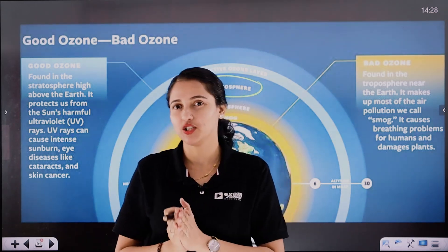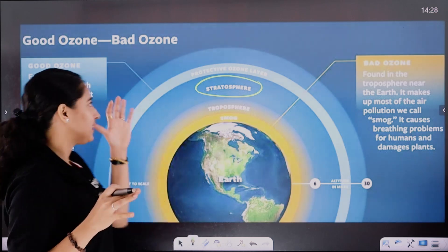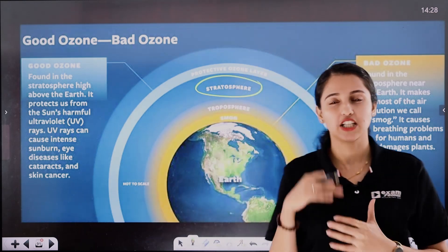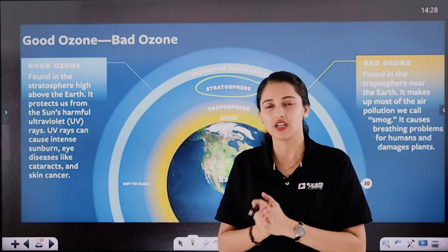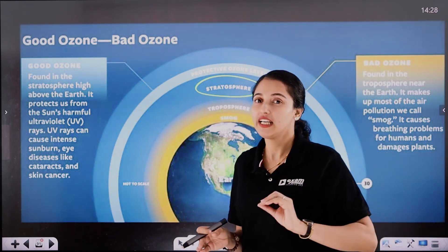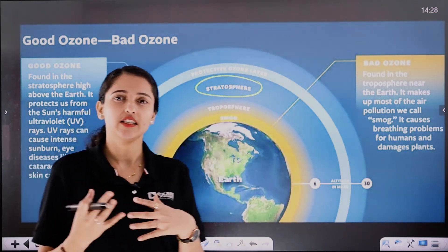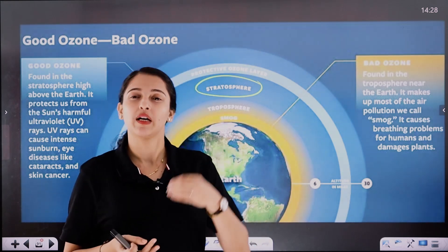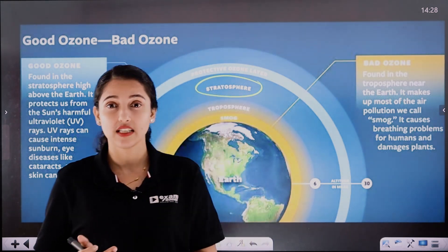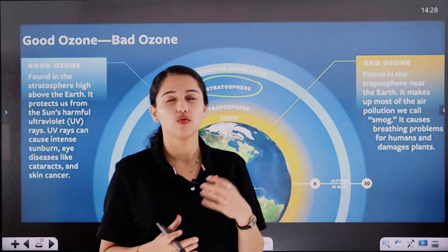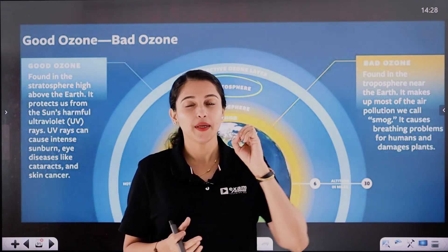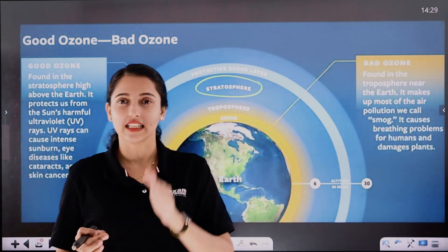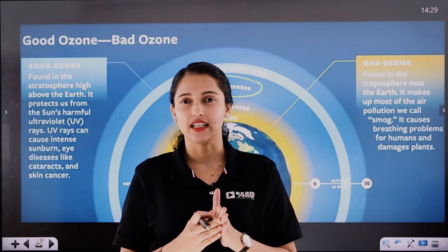What makes stratosphere ozone good? The sun emits a very dangerous radiation — ultraviolet rays. If this ultraviolet radiation enters our environment, it causes all kinds of problems: skin diseases, eye diseases, cataracts, cancer, etc. Even the growth of plants will be interrupted.